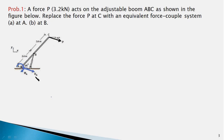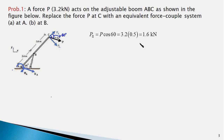This moment MA is the moment of the force P about point A. In order to determine this moment, we first break up the force P into its parallel and perpendicular components. Since the boom ABC makes an angle of 45 degrees with the horizontal, this angle too would be 45 degrees, and therefore this total angle will be 60 degrees. Therefore, P parallel would be P cos 60, and P perpendicular would be P sin 60. P parallel works out to 1.6 kN, and P perpendicular works out to 2.77 kN.